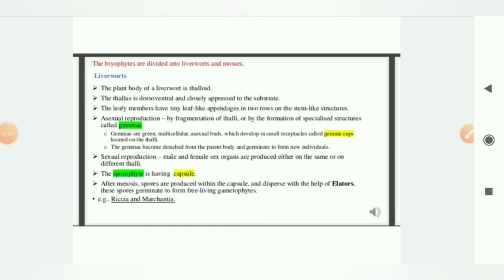I have told you that the bryophytes are divided into liverworts and mosses. So what are these liverworts? Here the plant body is thalloid. Thalloid means what? It is not at all differentiated into root, stem and leaf. So somewhat it is like algae only. Thallus is dorsal-ventral and closely oppressed to the substrate. Means it have upper portion also, dorsal and ventral means lower portion also, and it is attached to the substrate means soil.